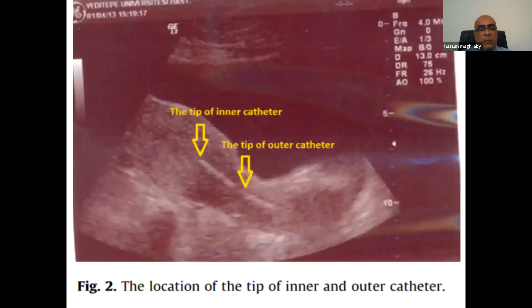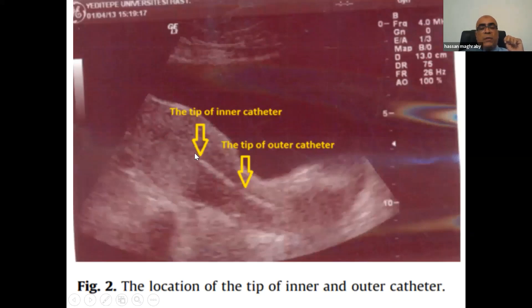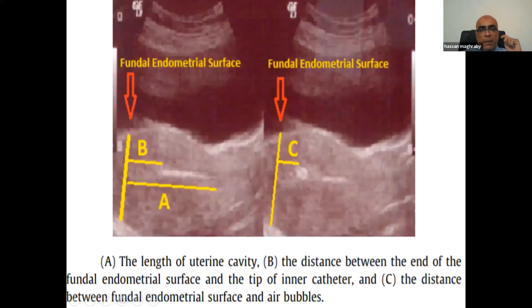In trans-abdominal ultrasound guidance, you use the abdominal ultrasound, fill the bladder, and introduce the embryo transfer catheter. The outer sheath is locked at the internal os, and you advance the internal catheter to about 1 to 1.5 centimeters from the tip of the fundus, so that when you push the embryos, they arrive at a point less than one centimeter from the tip of the fundus. In this diagram, you can see where the catheter tip should be, where the droplet will be placed, and the length of the uterine cavity as shown by abdominal ultrasound.